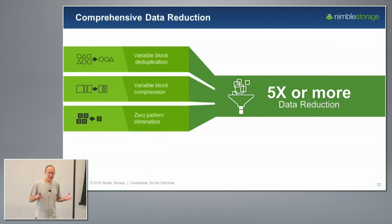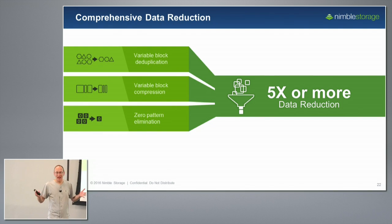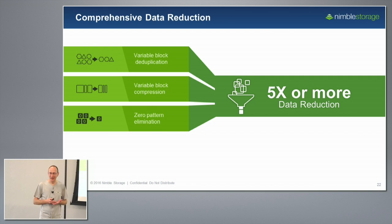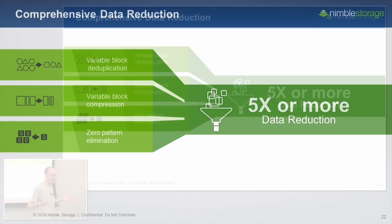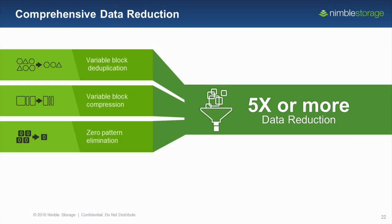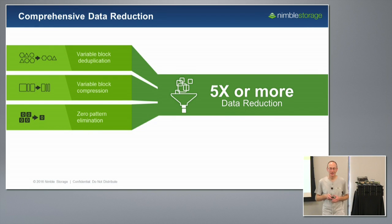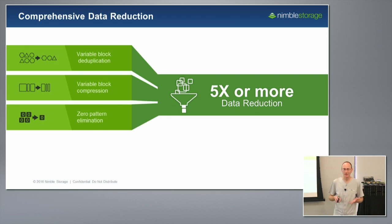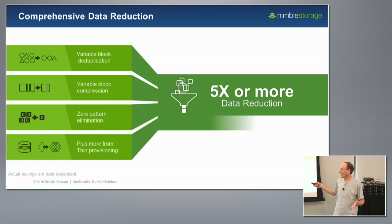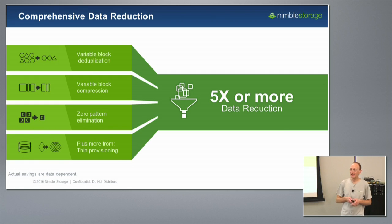Data reduction is an absolute must for all-flash arrays, and we have deep expertise here. One of our founders was the core architect of DataDomain and built the CISL single-instancing file system that DataDomain is still famous for. We developed an inline, global, variable-block dedupe and compression that achieves fantastic data reduction rates. We also have zero block elimination, zero copy clones, and thin provisioning — the net result is really stellar data reduction, a must-have in the all-flash space.